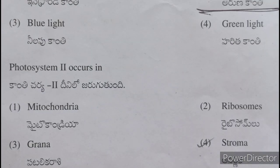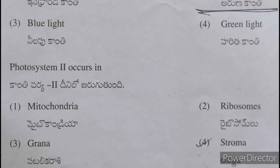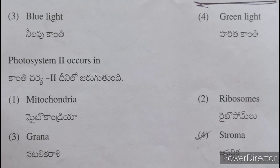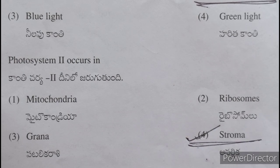Photosynthesis stage 2 occurs in — kanti cherya 2 dhinilow jarugutundi — stroma. Avarnika lo jarugunu — it occurs in the stroma.